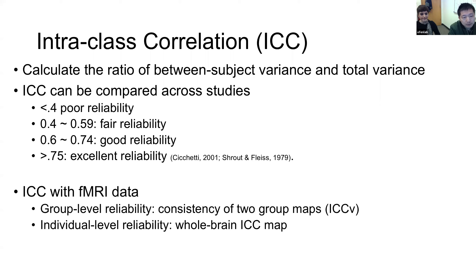In terms of fMRI, we also have different methods to measure the ICC. If you have two group maps, you can use voxel-wise ICC to measure how similar they are — almost like a correlation. For the individual level, you can measure across all voxels in the whole brain and generate a map to see which regions show higher or lower reliability.